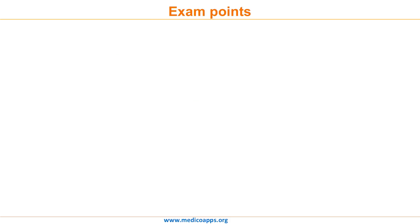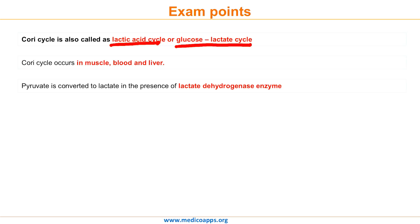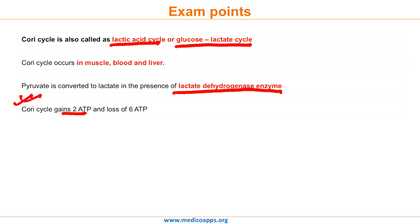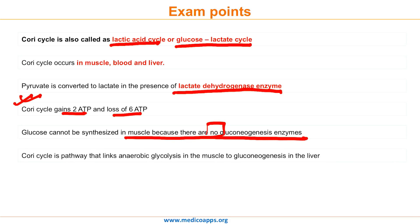The important exam points for the Cori Cycle are: Point 1 — the Cori Cycle is also called the Lactic Acid Cycle or the Glucose-Lactate Cycle. Point 2 — it takes place in muscle, blood, and liver. Point 3 — pyruvate is converted to lactate in the presence of lactate dehydrogenase enzyme. Point 4 — the Cori Cycle gains 2 ATPs but with a loss of 6 ATPs. Point 5 — glucose cannot be synthesized in muscle because there are no gluconeogenesis enzymes. Point 6 — the Cori Cycle is a pathway linking anaerobic glycolysis in the muscle to gluconeogenesis in the liver.